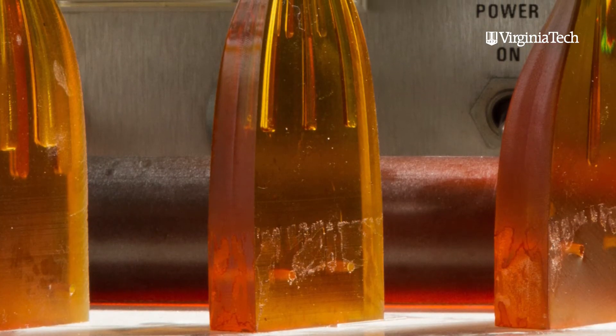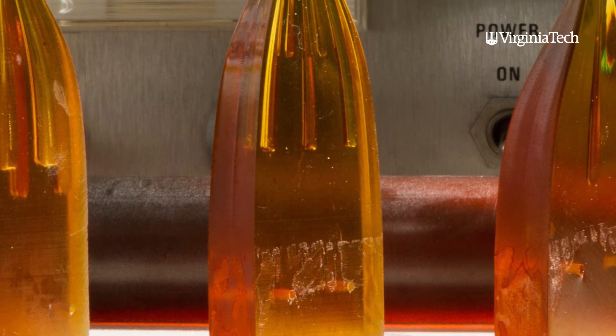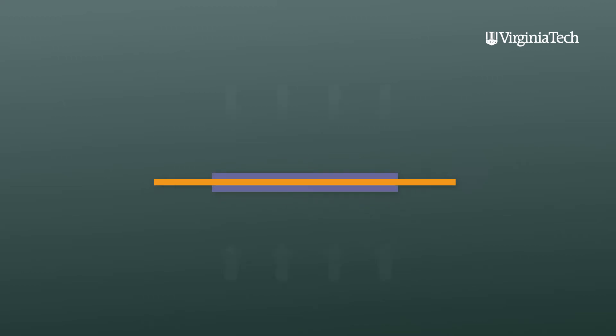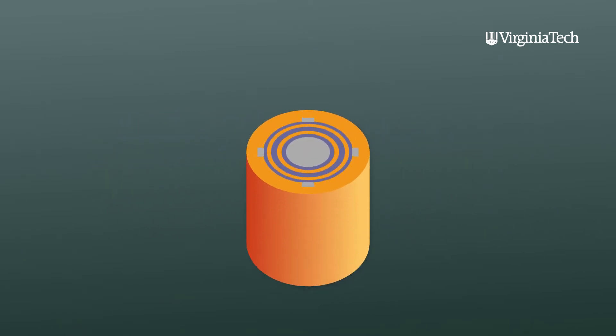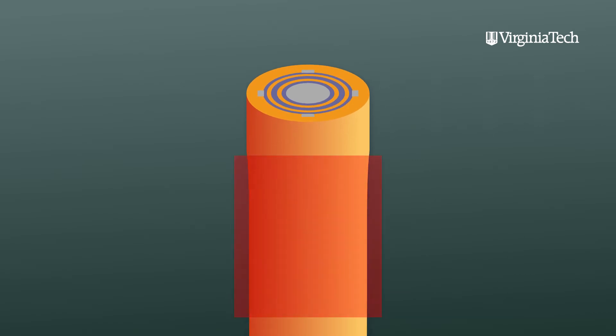We would first make a large-scale macroscopic preform. We design a geometry with the desired functions and then we would fabricate it using evaporation or rolling or thermal consolidation, and then we would put that macroscopic preform into our fiber joint tower.